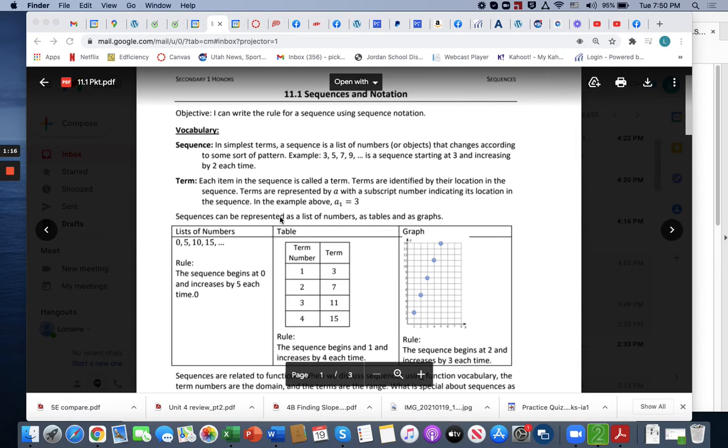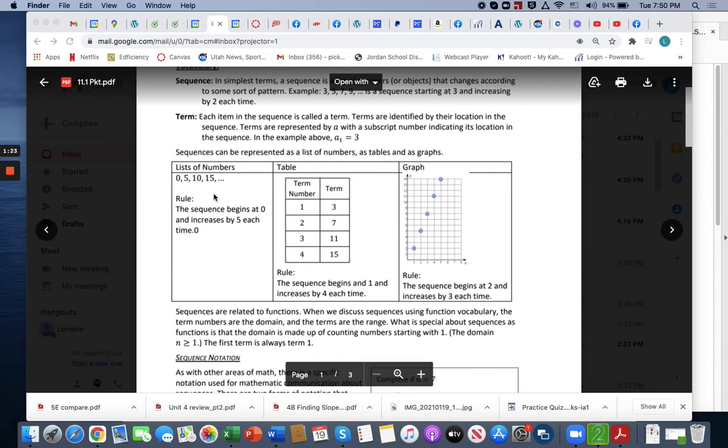Sequences can be represented as a list of numbers, as tables, and as graphs. So for example, here's a list of numbers: 0, 5, 10, 15. The rule is the sequence begins at 0 and increases by 5 each time. The first term is 0, second term is 5, third term is 10, fourth term is 15.